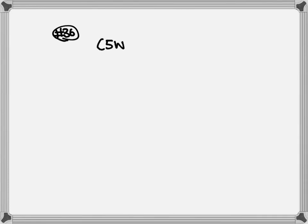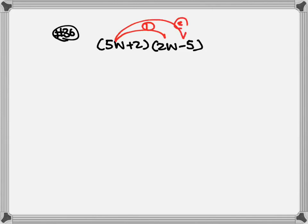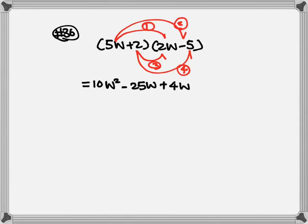Next, let's look at number 36. We have 5w plus 2 times 2w minus 5. Again, let's use the FOIL method. Step 1: 5w times 2w — 5 times 2 is 10, w times w becomes w squared, so 10w squared. Step 2: 5w times negative 5 becomes negative 25w. Step 3: 2 times 2w becomes plus 4w. Step 4: 2 times negative 5 becomes negative 10. After that, let's combine like terms.